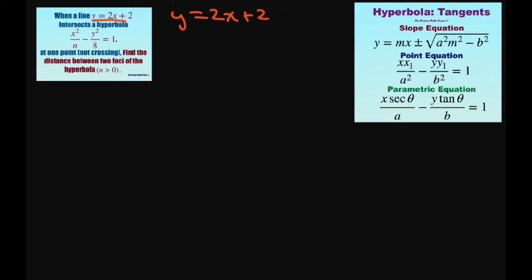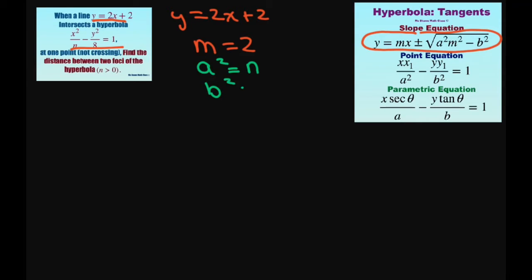So let's look at this equation. We have this line y equals 2x plus 2, so the equation of a tangent line with a slope of 2 is going to be given by this formula here. Our m is 2, our a squared is going to equal n, and our b squared equals 8.